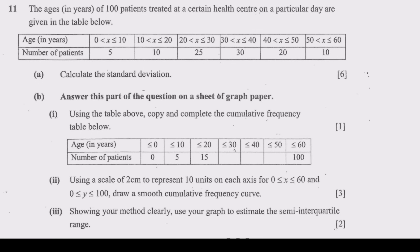Question 11 lists the ages in years of patients treated at a certain health center on a particular day, given in a table with age in years and number of patients. Question A asks us to calculate the standard deviation. This is grouped data — for example, anyone between 0 and 10 years is in one group with 5 patients. We know there are 5 patients aged 0 to 10, but we don't know individual ages, hence it is called grouped data.